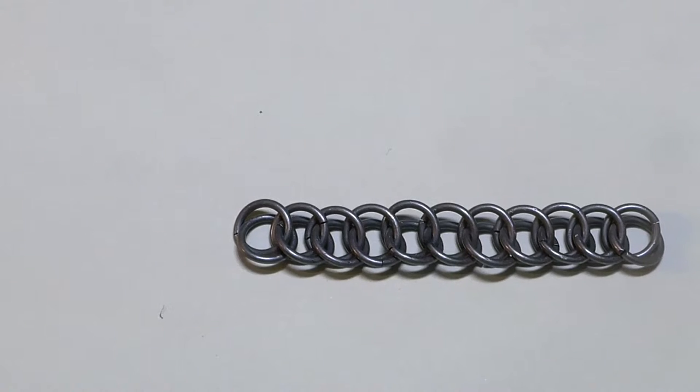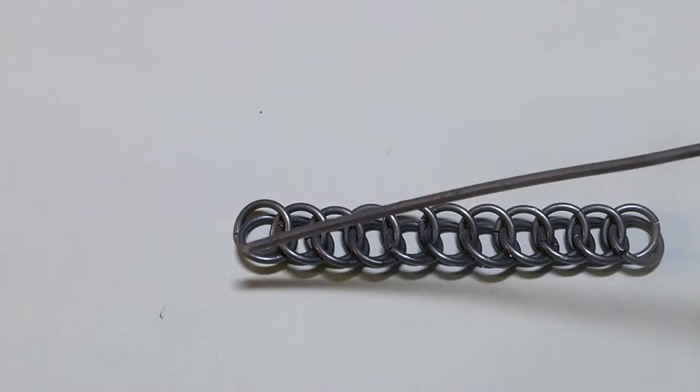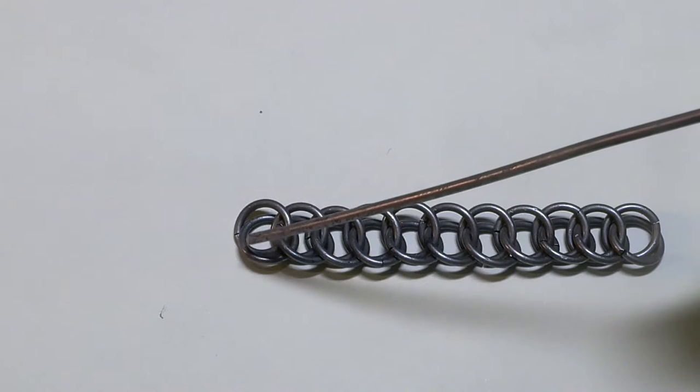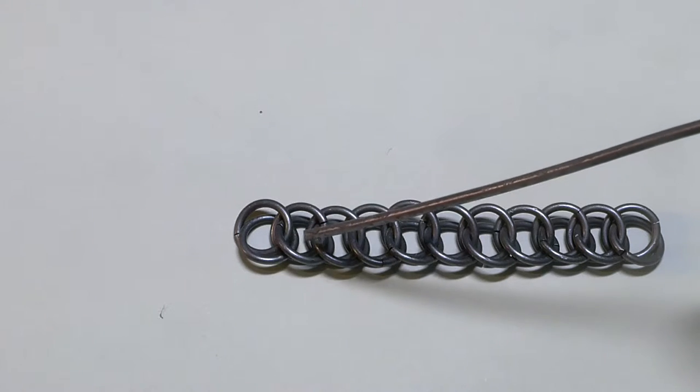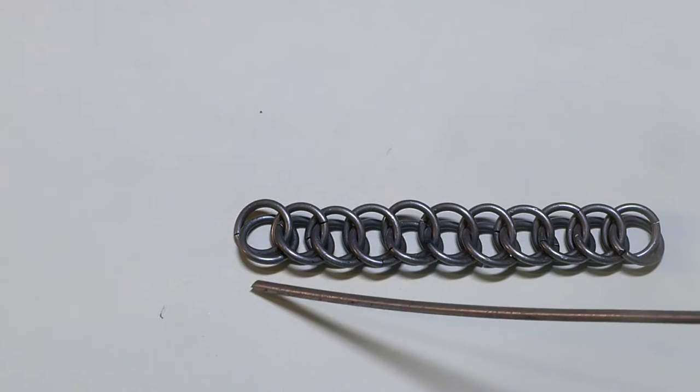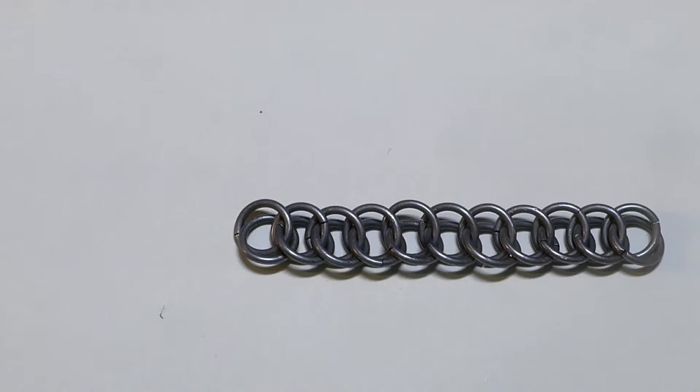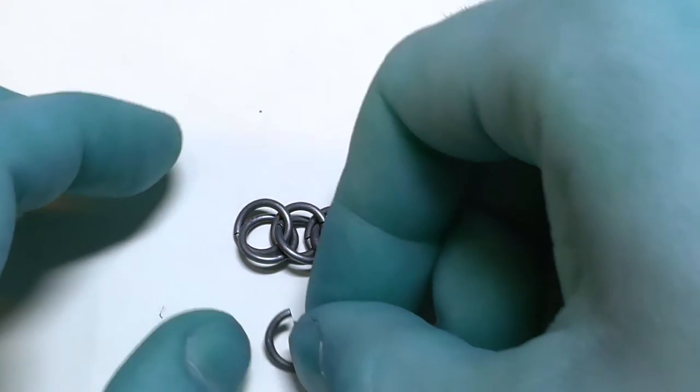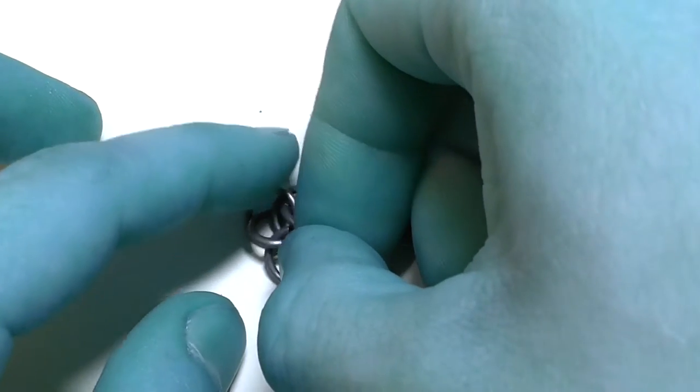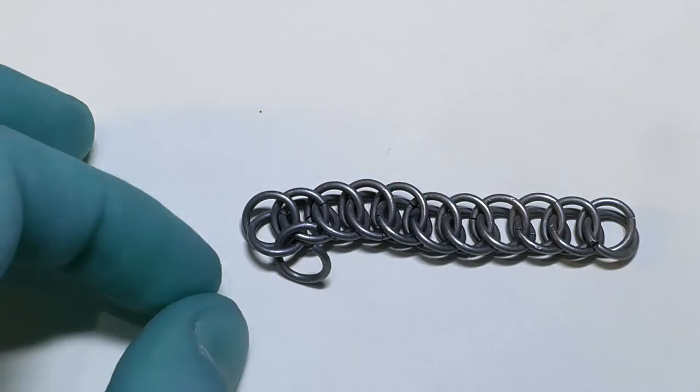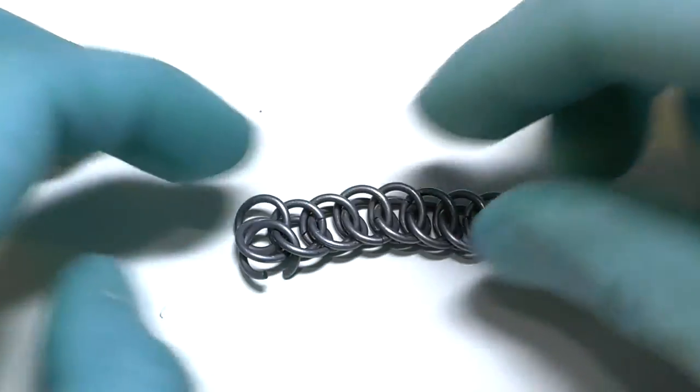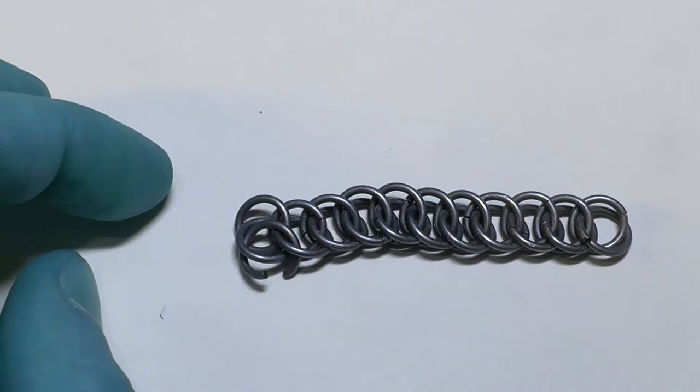The first ring of the next row will go through these two rings. This one and this one. And it will go from the bottom. Just like that. There and there. Now let's close the ring.